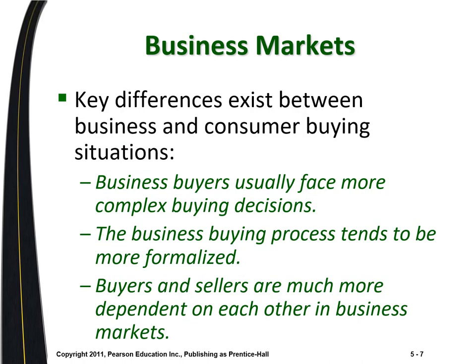Some key differences in business buying: business buyers make complex buying decisions because different parts of their company may have different standards or priorities. They also have to predict what end demand will be before it occurs, because there's a lag between when they buy inputs and when they deliver their product. There can also be changing market demand — for example, in clothing, people may want one color one season and another color the next, so businesses must ensure they have the right fabrics and raw materials. In fashion, decisions about the current season's line are often made about a year in advance.